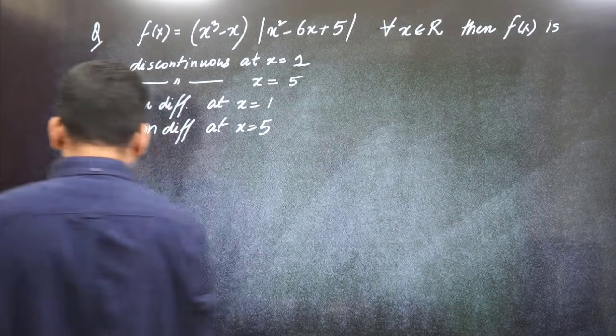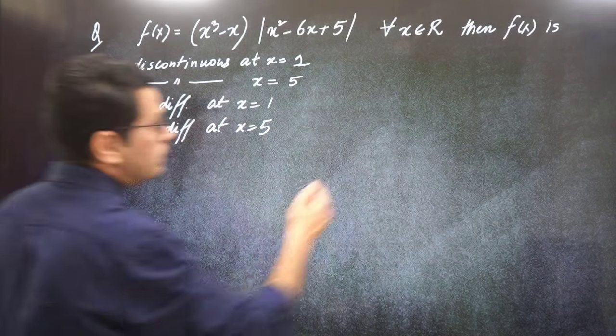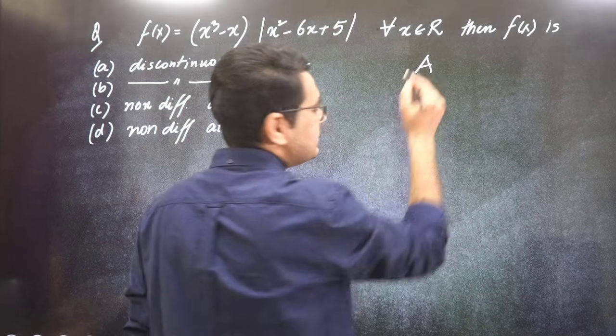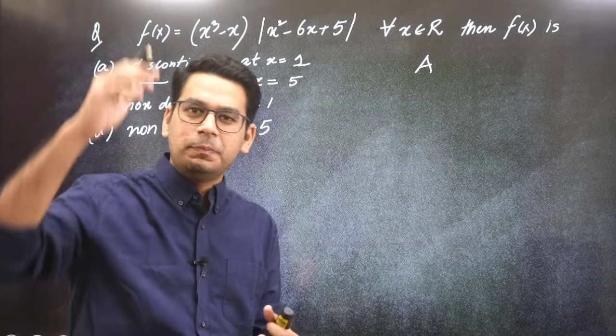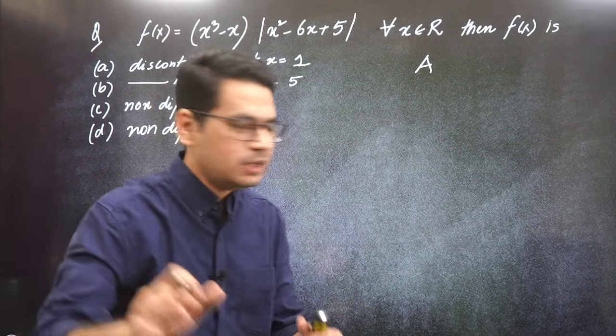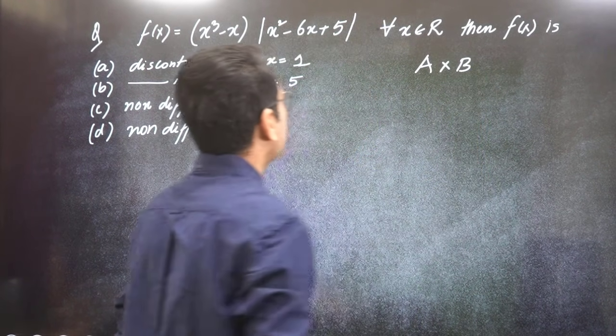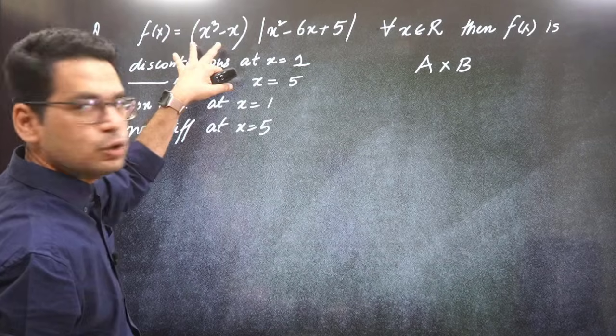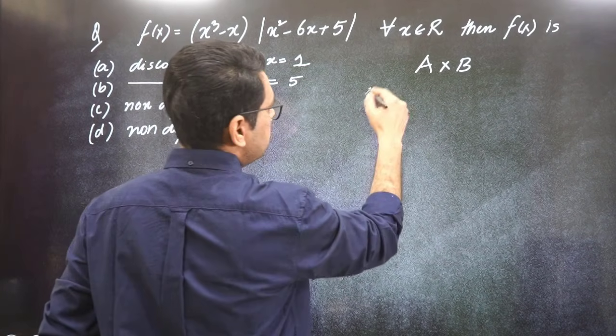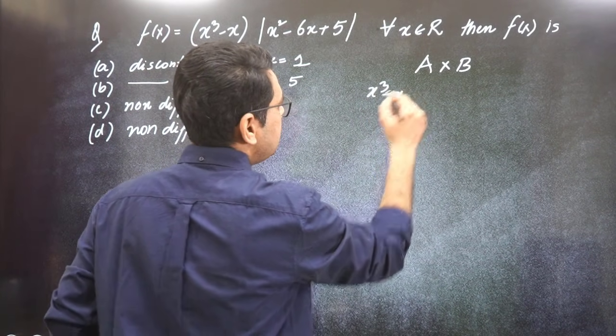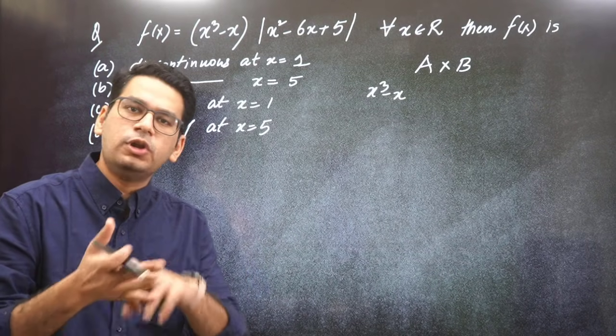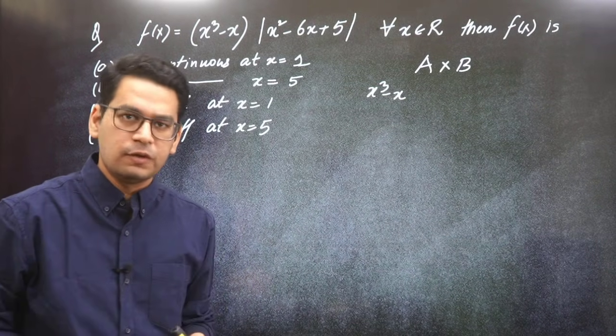First of all, these kind of questions are where product of two functions are given. If I notice here, let me explain first. So a times b sort of function. So a here is x³ minus x. So what do we know about polynomials? Polynomials are always continuous and differentiable.